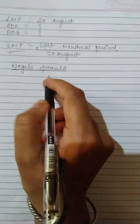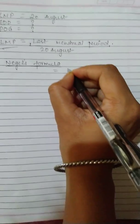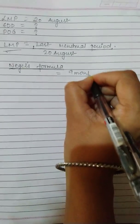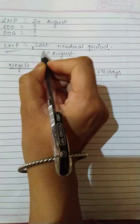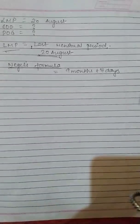Which is used to calculate last menstrual period. So you can say that this is Nigel's formula. What we do in this formula that we add nine months plus seven days to the LMP.